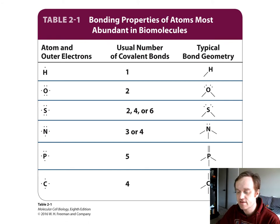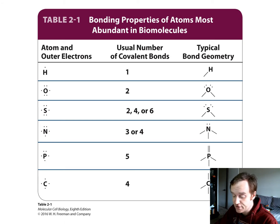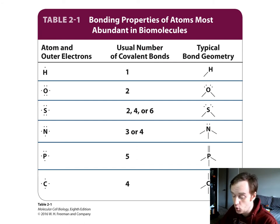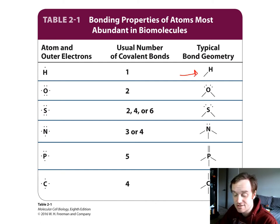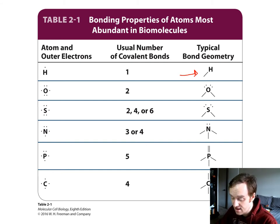Let's look at the binding properties of the atoms most abundant in biomolecules. Hydrogen is the most basic atom; it has a single electron to share and forms only one covalent bond. Oxygen usually forms two covalent bonds but has two additional pairs of electrons that can participate in non-covalent interactions — it forms two bonds but still has two sets of electrons that can interact outside those covalent bonds.